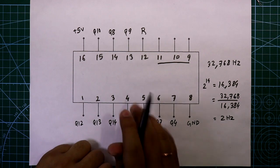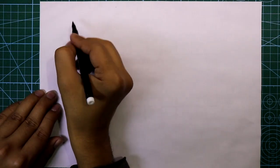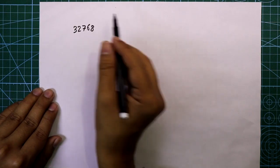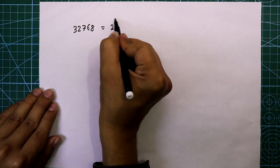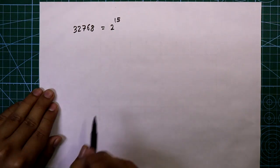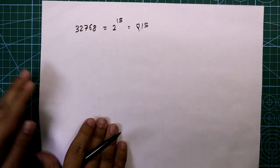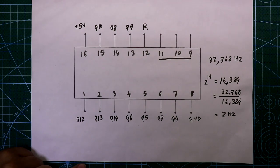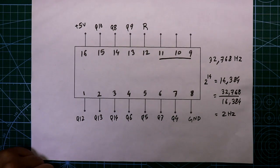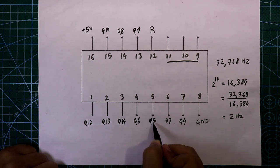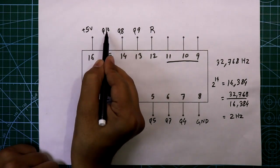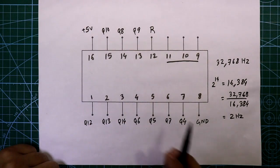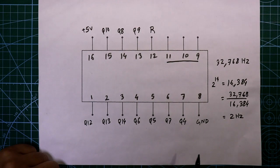We need two ICs. Our input frequency equals 2 to the power 15, so we have to make Q15. Since this IC only goes up to Q14, we need a combination that equals Q15. For example, Q5 and Q10 together give Q15, or Q7 and Q8 — that is pin 6 and pin 14 — also give Q15.